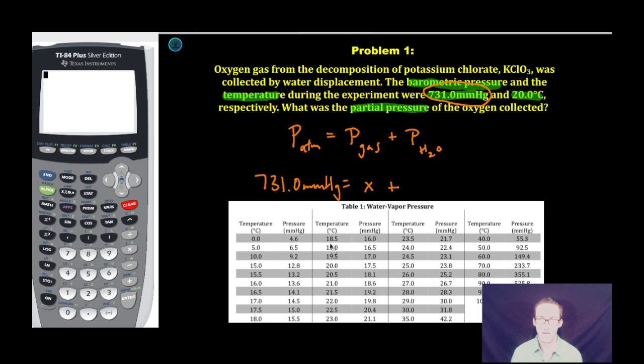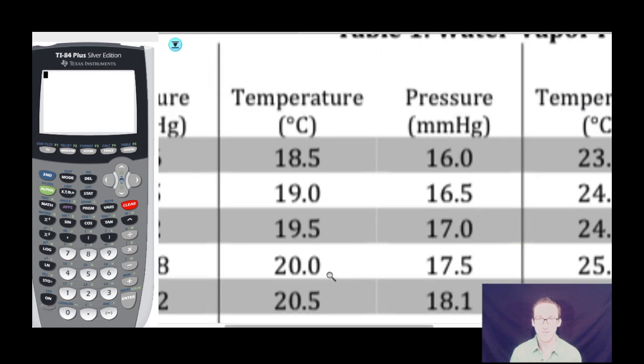That's where this reference list is going to come into play. It's just a matter of recognizing what the partial pressure of water is at 20 degrees Celsius. So a quick look at my reference sheet tells me that the partial pressure of water vapor at 20 degrees Celsius is 17.5 millimeters mercury.